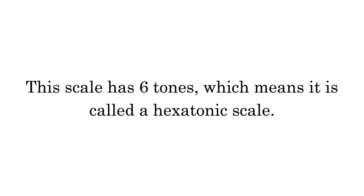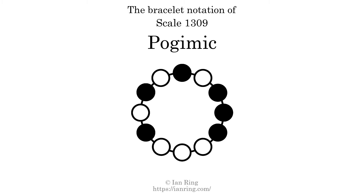This scale has six tones, which means it is called a hexatonic scale. This is a bracelet notation diagram of scale 1309. The shaded circles represent tones that appear in the scale, and they are read clockwise, starting at the top.